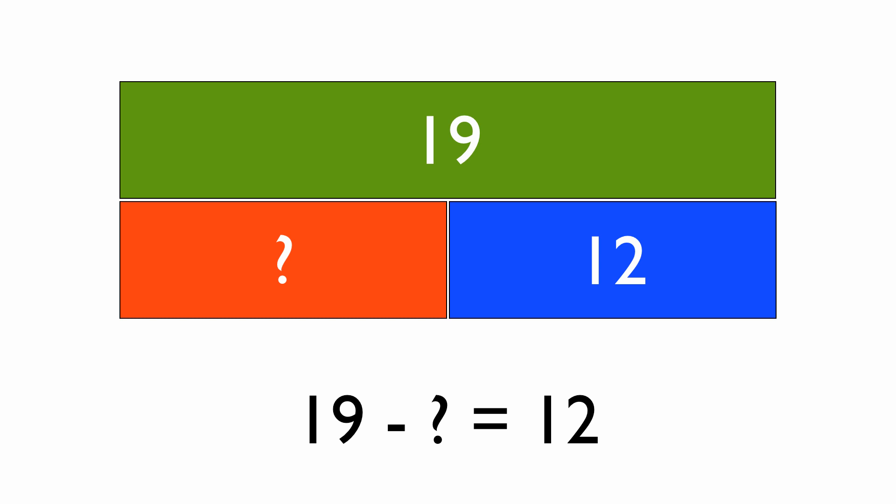Now, to solve this we want that question mark to be at the end of the sentence. The way that we do this is by rearranging. We do 19, take away the thing that we know. We take away the 12.